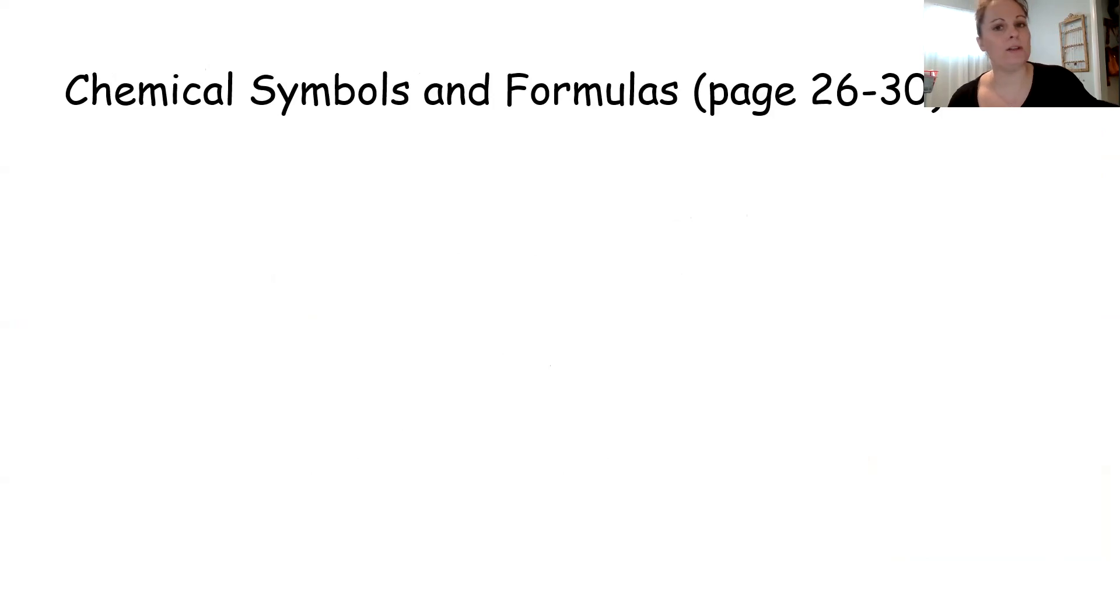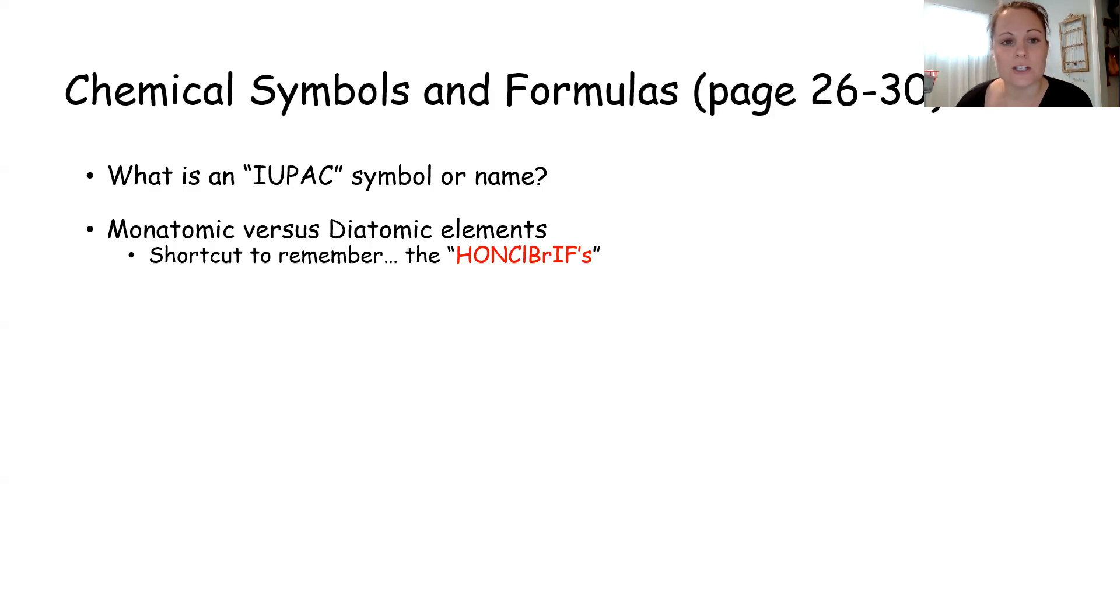The first section on chemical symbols and formulas starts on page 26 of your review book. So the first thing I want to mention is you'll see this IUPAC, I-U-P-A-C, a lot when it comes to naming. It stands for the International Union of Pure and Applied Chemistry and it just means what is the scientific symbol or name for an element or a compound. The next little section on monatomic versus diatomic elements. Monatomic mono means one, di means two. So most of the elements on the periodic table are monatomic like copper is just written as Cu, magnesium is just written as Mg, but some are diatomic and those we affectionately call the Honkelbriefs. So hydrogen, oxygen, nitrogen, chlorine, bromine, iodine, and fluorine are always written as H2, O2, N2, etc. They are diatomic elements.